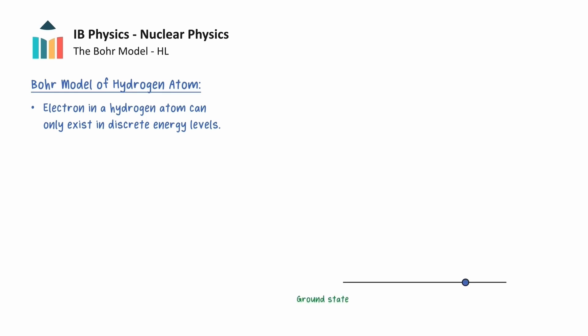The electron in a hydrogen atom can only exist in discrete energy levels. When undisturbed, the electron occupies the lowest energy state known as the ground state. This energy state is denoted with n equals 1 and has an energy of negative 13.6 electron volts.